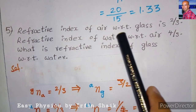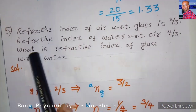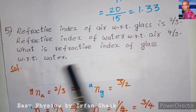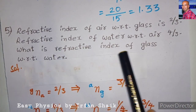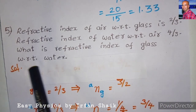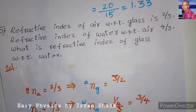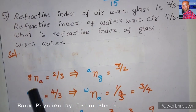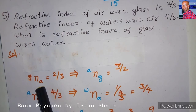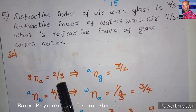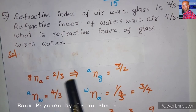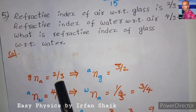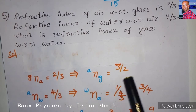Next problem: the refractive index of air with respect to glass is 2/3, and the refractive index of water with respect to air is 4/3. We need to find the refractive index of glass with respect to water. The refractive index of glass with respect to air is the reciprocal of 2/3, which is 3/2.